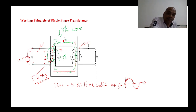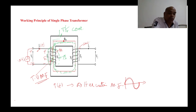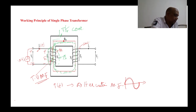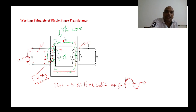The EMF induced in the secondary coil is called mutual induced EMF because the secondary conductor is cut by the flux developed in the primary coil. The EMF induced in the primary coil itself is known as self-induced EMF, because the EMF is induced by its own flux.